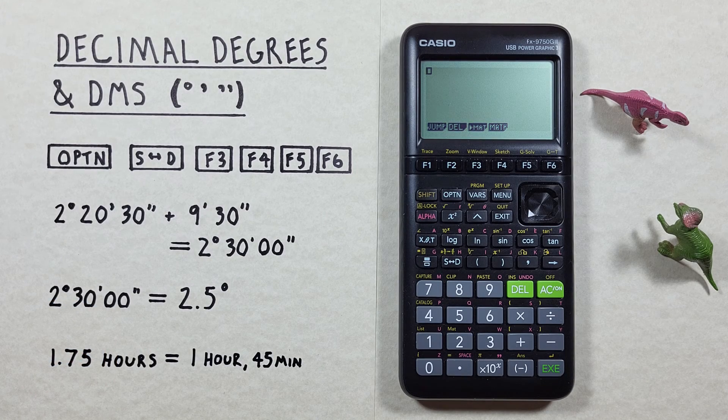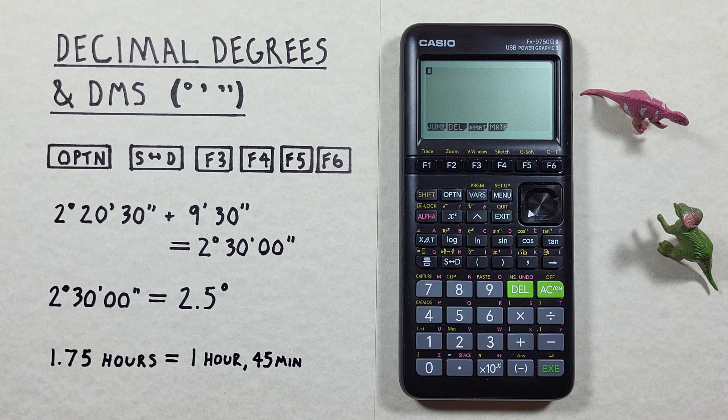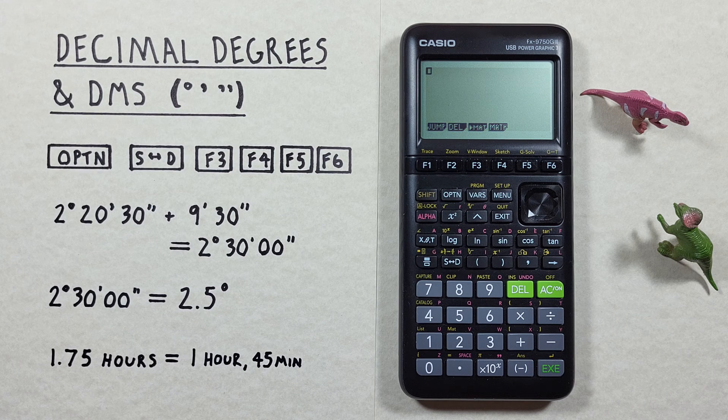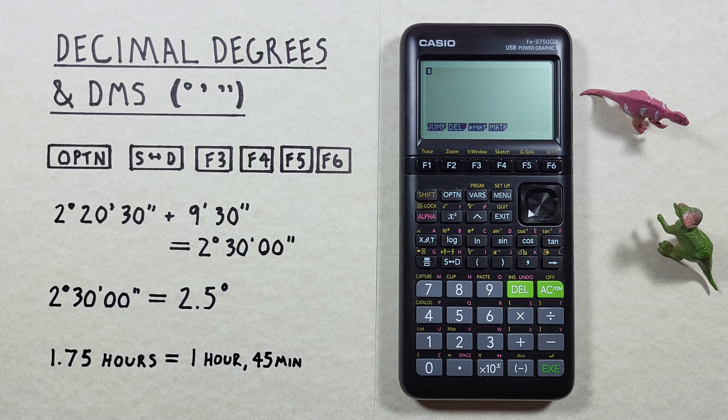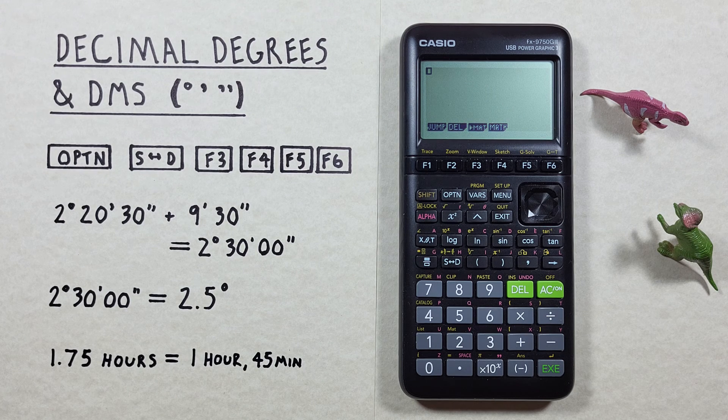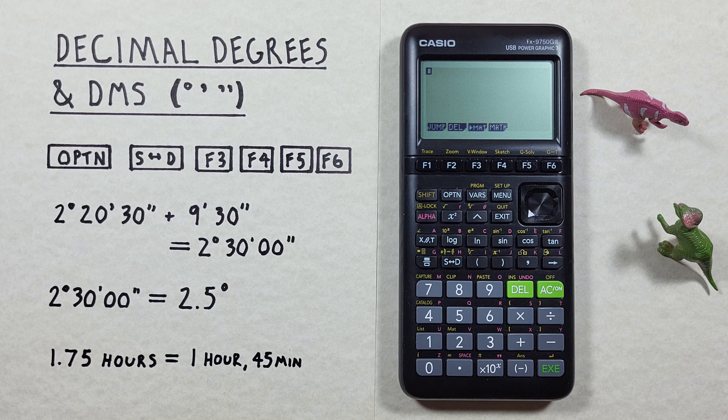Hello and welcome to HD Calcs. I'm Rick and in this video we're going to have a look at how we can enter and convert between decimal degrees and degrees minutes seconds on the Casio FX 9750 G3 calculator.